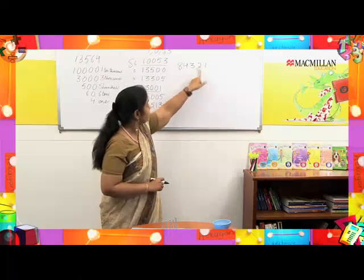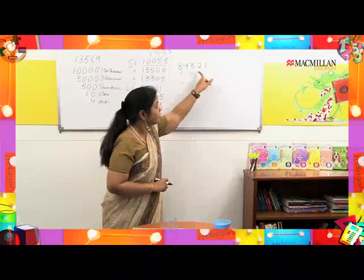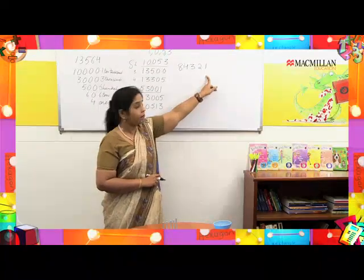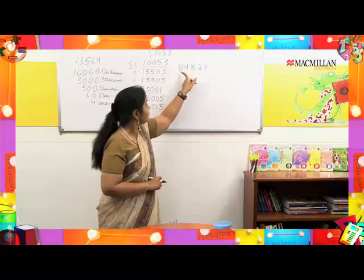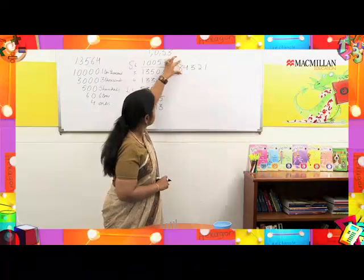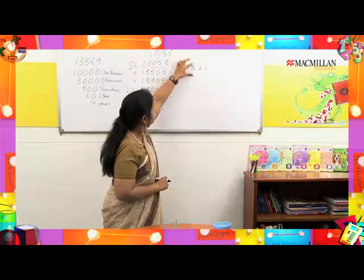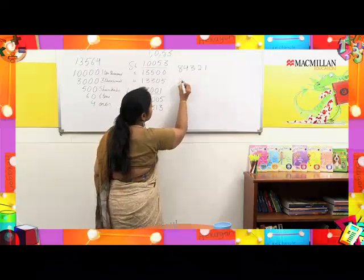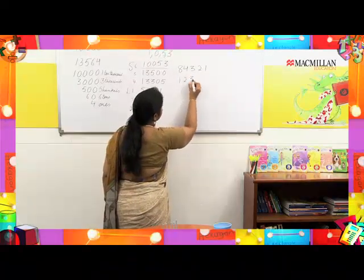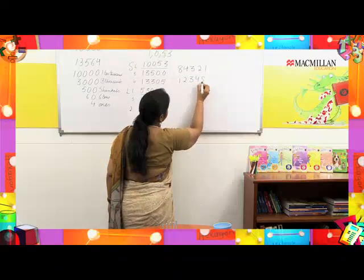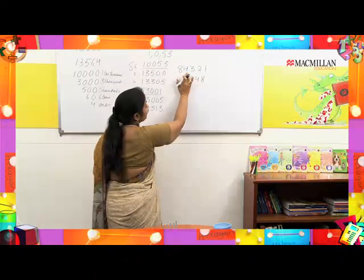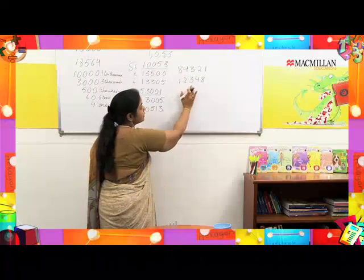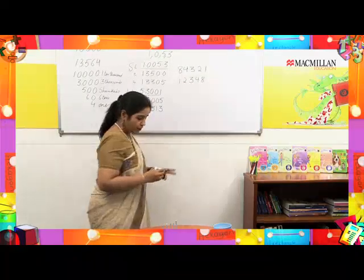The number I have created is 84,321 — and this forms the largest number with these digits. What will be the smallest number if I use these same digits: 8, 4, 3, 2, and 1? The smallest number will be 12,348.